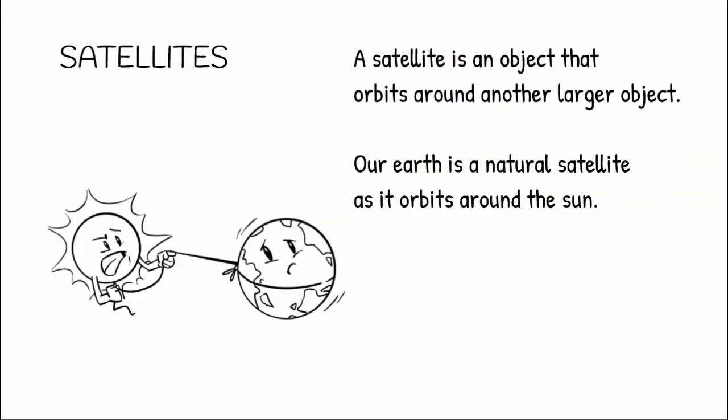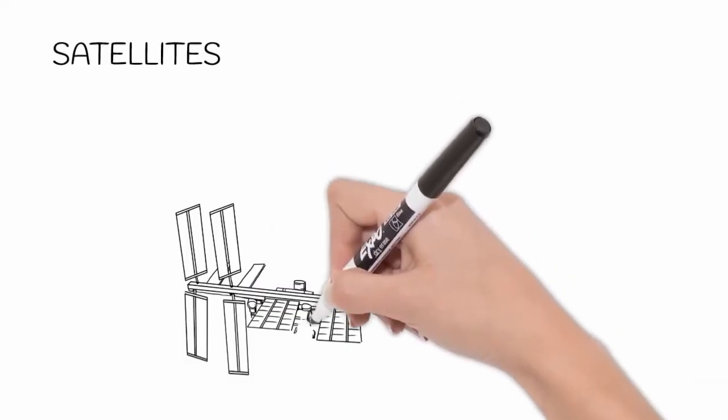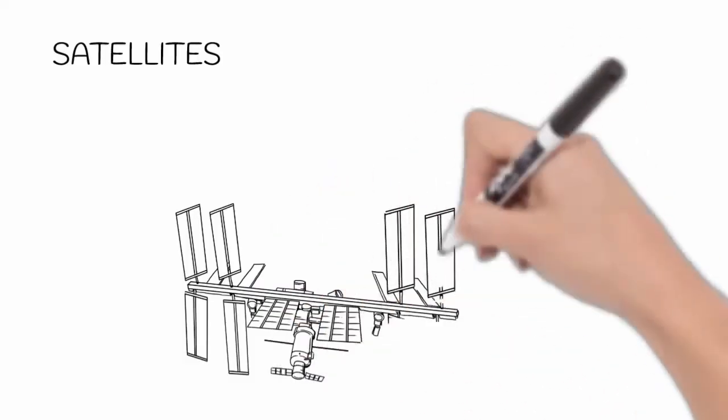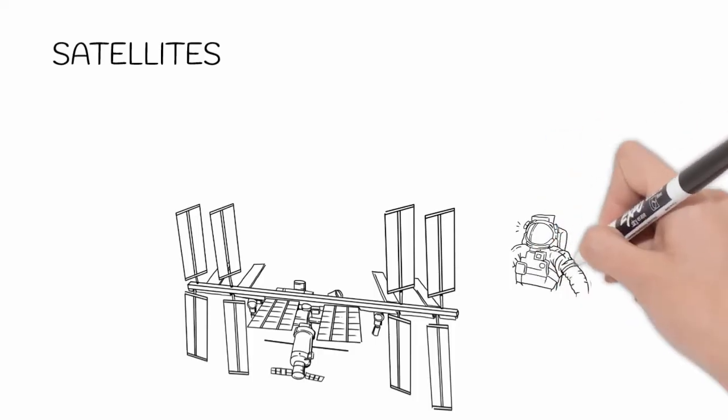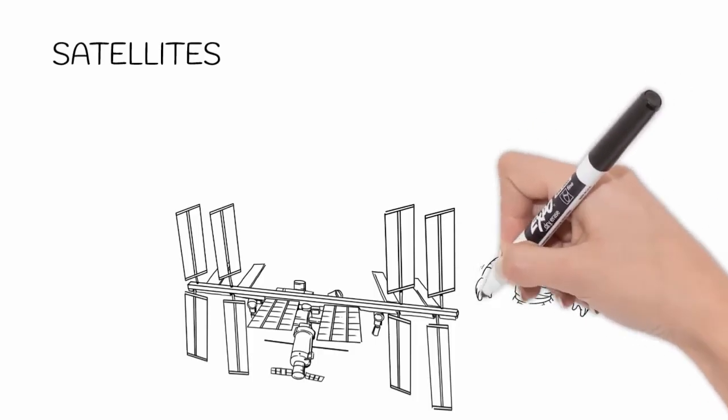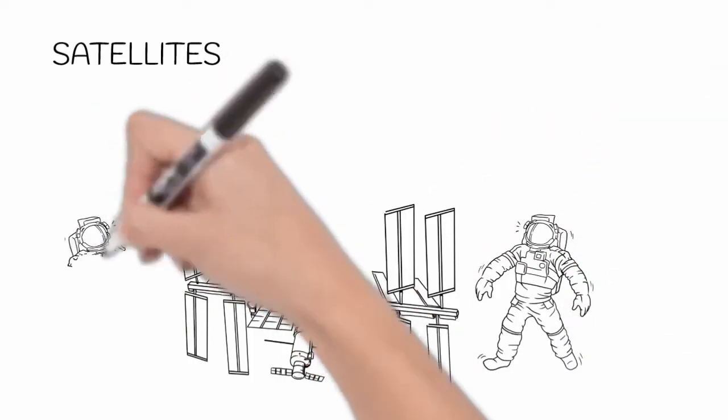In terms of technology, a satellite is a man-made object that has been launched into space to orbit a larger object, such as our Earth, in order to record information. The world's first artificial satellite was launched by the Soviet Union in 1957.